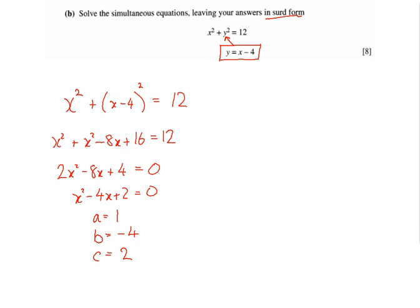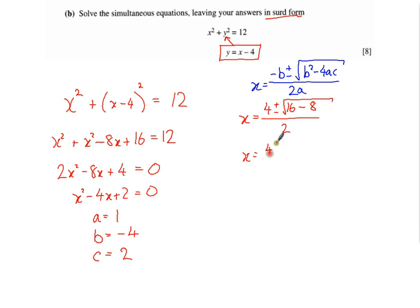So when I put that into x equals minus b plus or minus the square root of b squared minus 4ac all over 2a—make sure you know that equation—let's put our values in and find out what the answers are. x equals 4 plus or minus the square root of 16. Notice minus 4 all squared is positive 16, take away 4 times 1 times 2, so take away 8 all over 2.